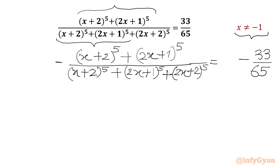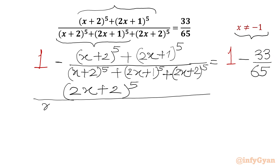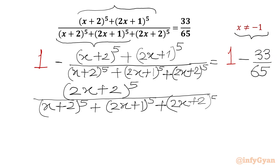Now I will add 1 to both sides. Once we take LCM on both sides, the common brackets (x+2)^5 + (2x+1)^5 cancel out, leaving only (2x+2)^5 in the numerator and (x+2)^5 + (2x+1)^5 in the denominator. The RHS becomes 65 minus 33 over 65, which gives 32 over 65.